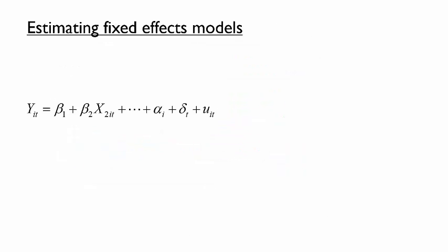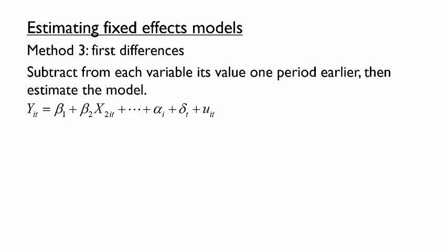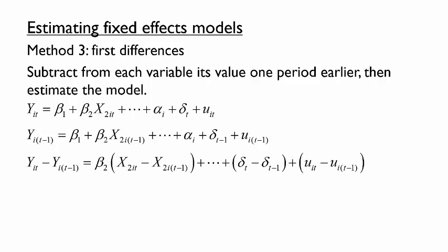One final method for estimating fixed effects models is to use first differences. To implement this method, subtract from each variable its value one period earlier and estimate the model. Start by lagging the model by one period — that is, ask what this relationship would look like in time t minus 1. Then subtract the time t minus 1 model from the time t model. We see that the difference between the dependent variable and its lag becomes the new dependent variable of the first differences model.